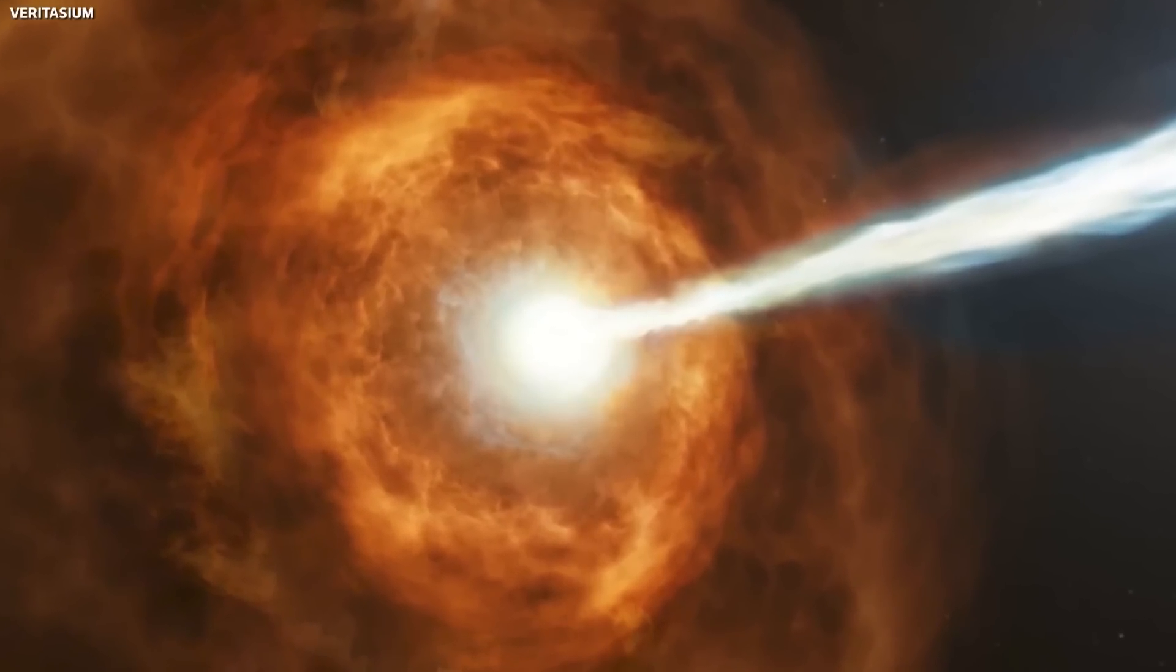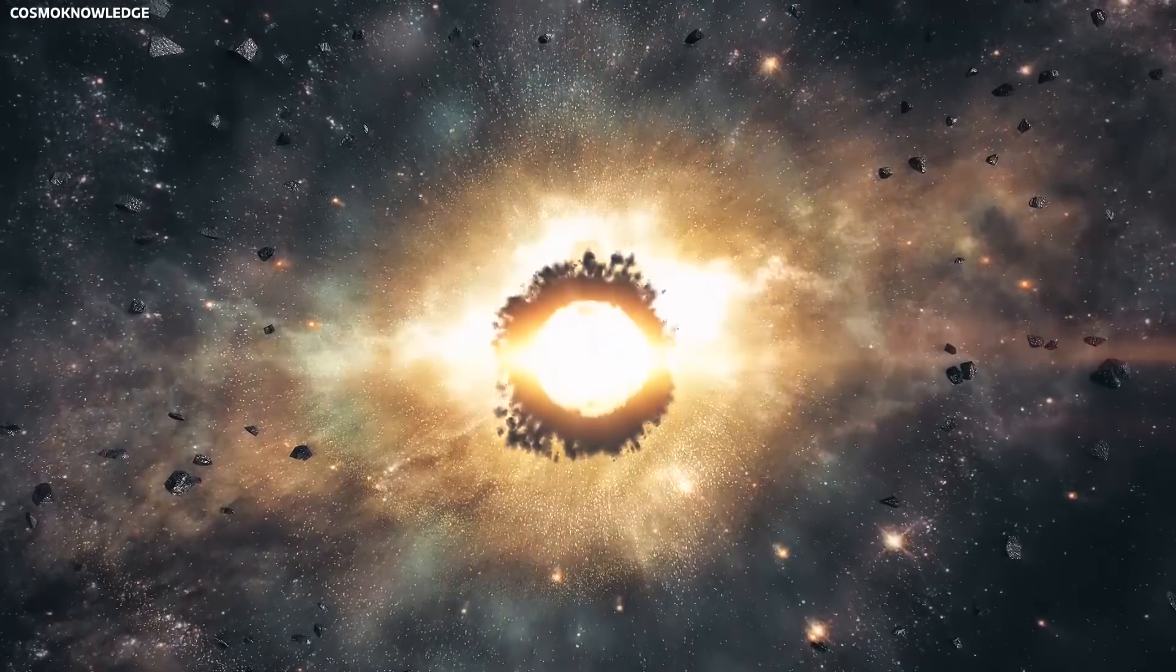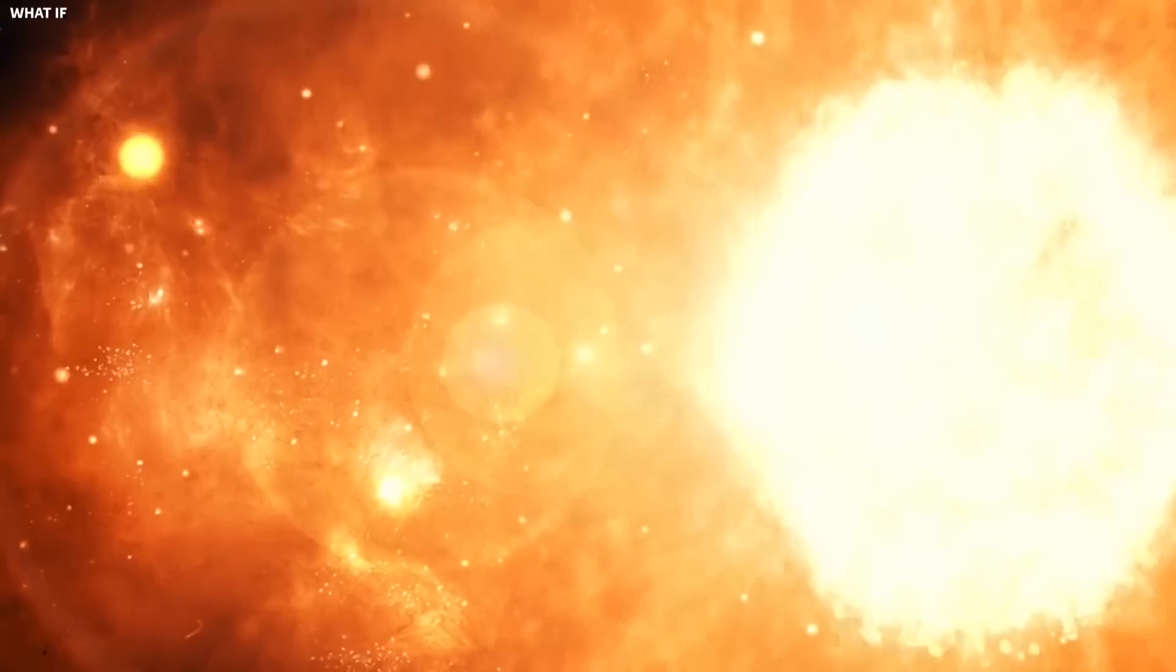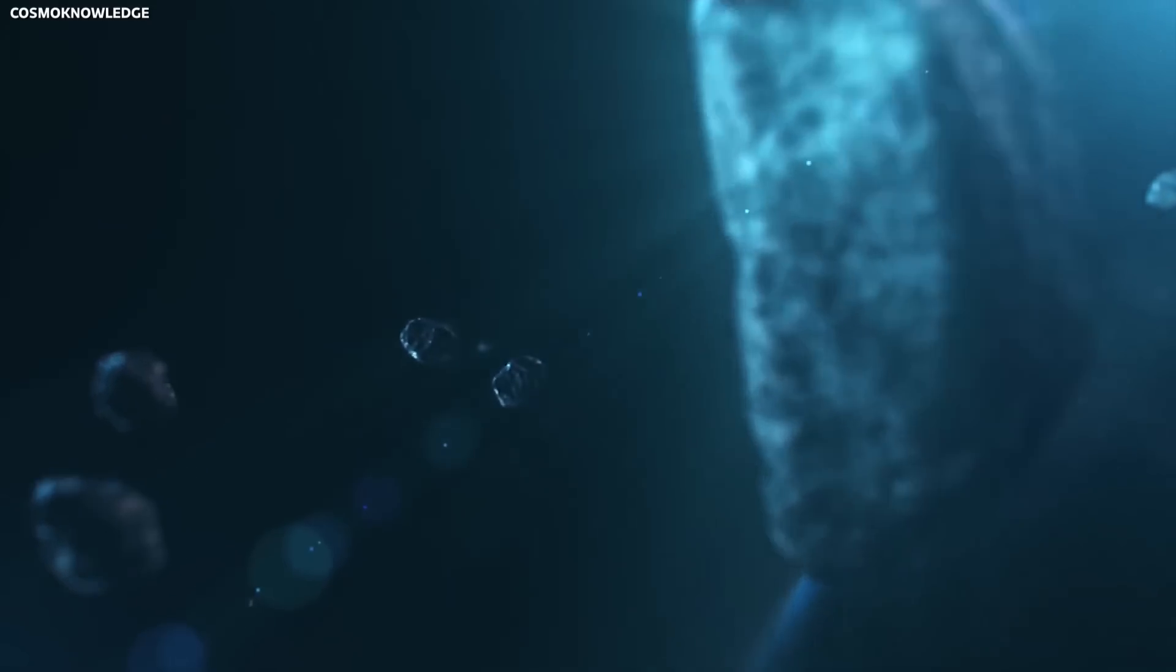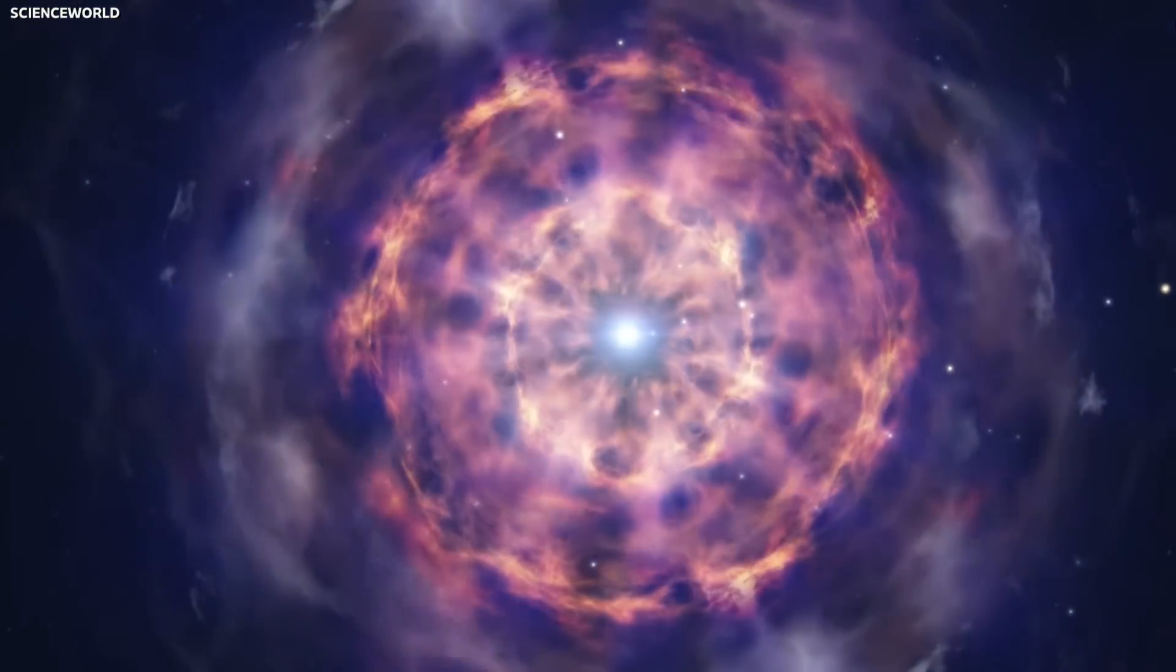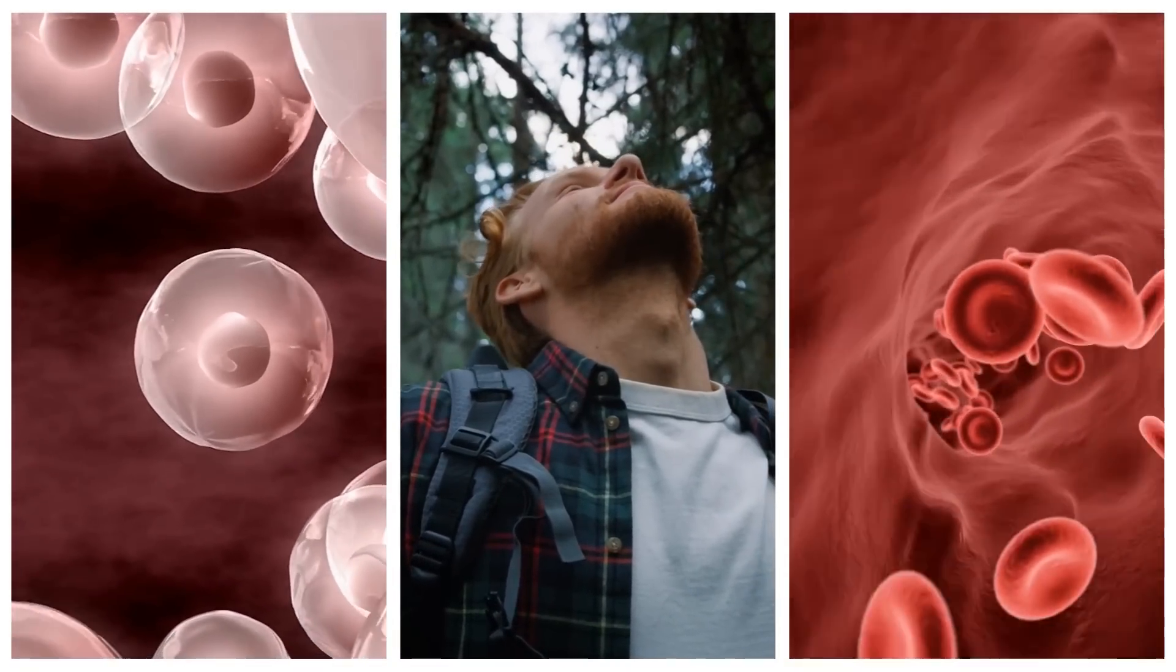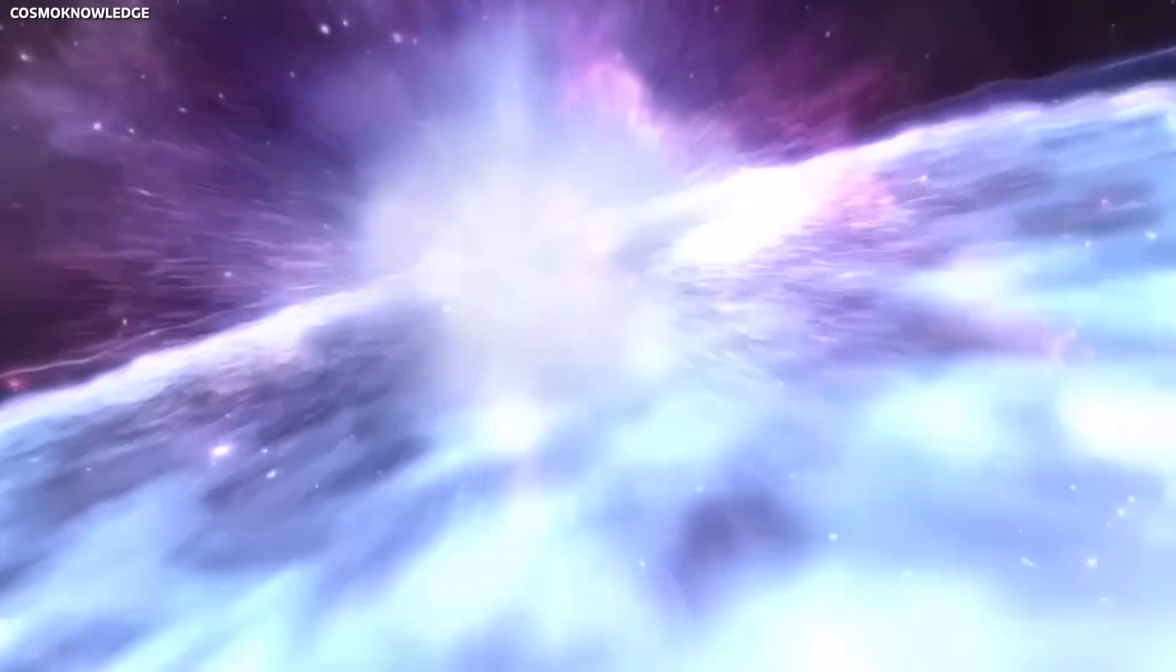On a more profound level, the materials ejected during the supernova would enrich the interstellar medium with heavy elements. Stars like Betelgeuse are cosmic forges, where elements heavier than hydrogen and helium are synthesized. When such a star explodes, it disperses these elements into space. Elements like carbon, oxygen, nitrogen and even metals like gold and platinum are spread out, seeding the cosmos with the raw materials for future stars, planets and possibly life. In a poetic sense, we owe our existence to the death of stars. The carbon in our cells, the oxygen we breathe and the iron in our blood, all were forged in the heart of stars that exploded long before our solar system was born.